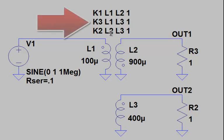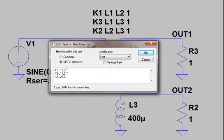A transformer with these three windings will usually have three mutual inductance statements, K1, K2, and K3. Entering all these inductor names by hand to generate these individual statements is a bit tedious. A better approach is to use a single K statement in which you define all the inductors that are wound on the same core.